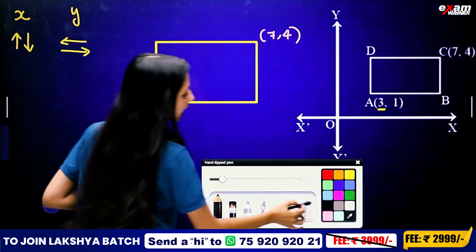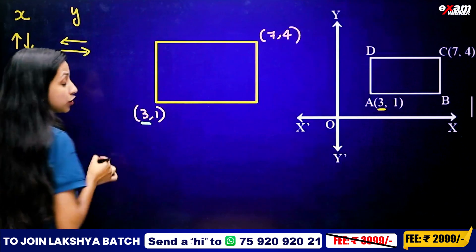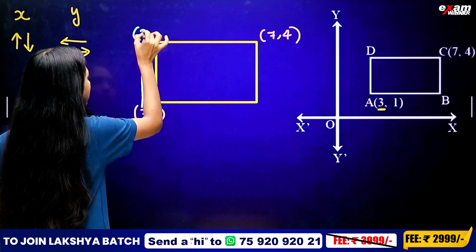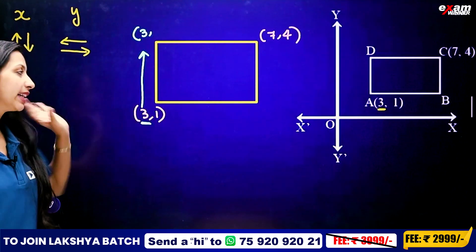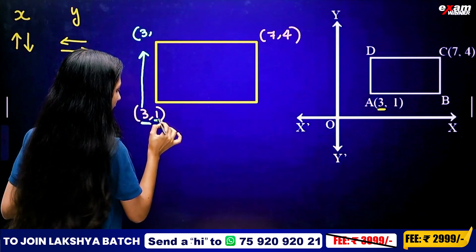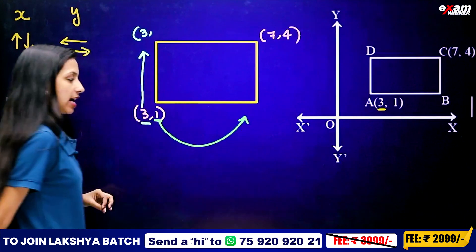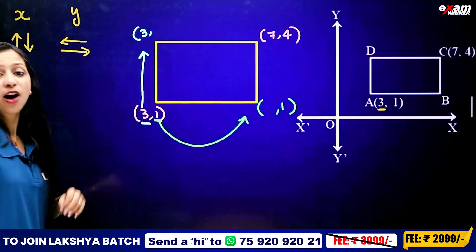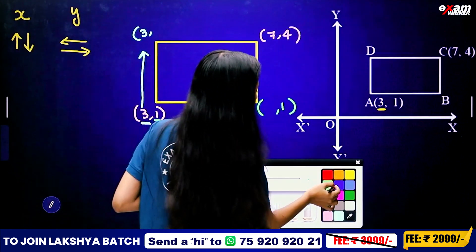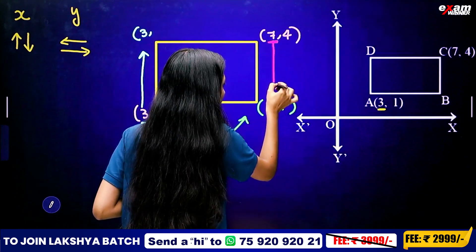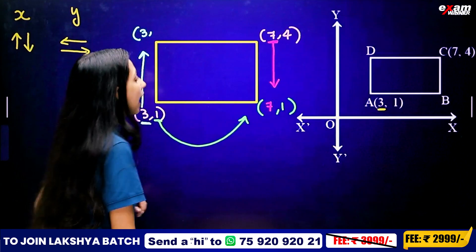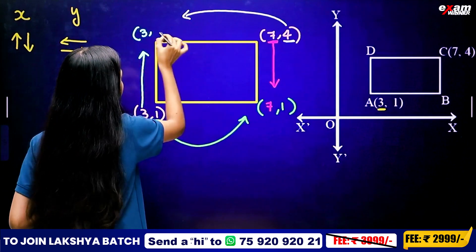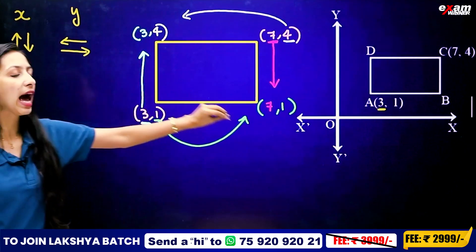Now we shift the coordinates. The first coordinate x changes to 3 and we also change the y value of 1. We shift the y coordinate and change the value to 4. Now we find the two new points: (3, 4) and (7, 1).